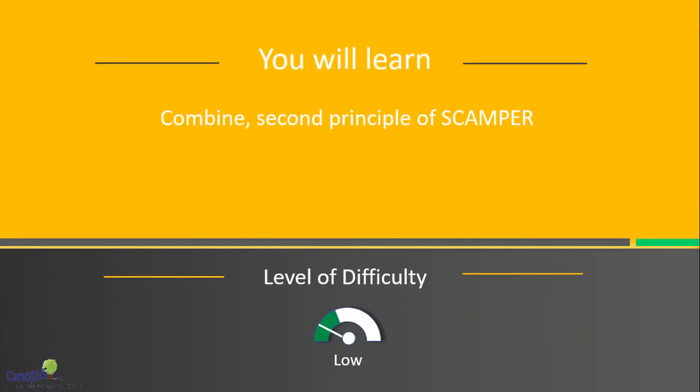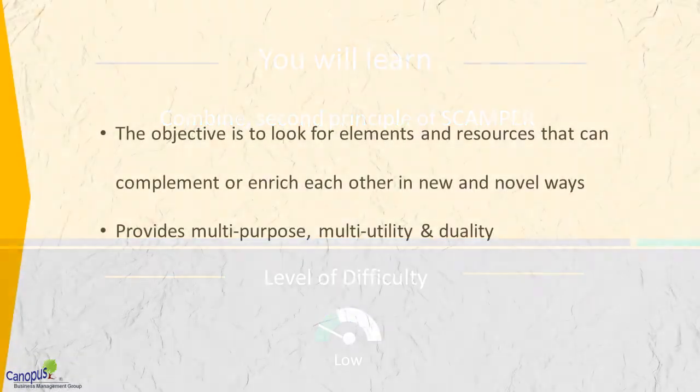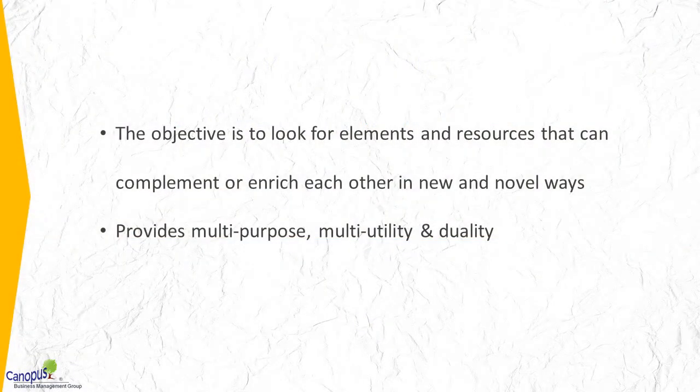In this lecture, we will talk about the second principle of SCAMPER called combine. The objective of applying this principle is to look for elements and resources that can complement or enrich each other in new and novel ways. By doing so, we may be able to overcome the problem.